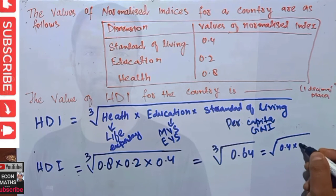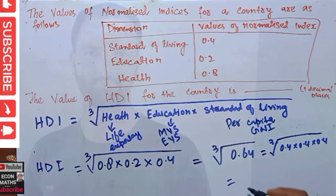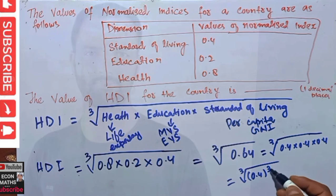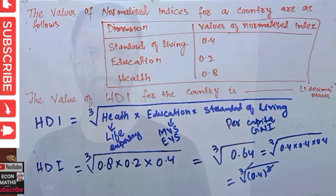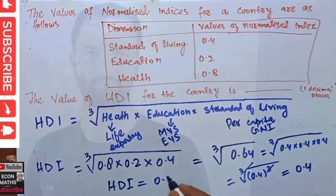Since 0.064 is a perfect cube, it can be written as 0.4 × 0.4 × 0.4, which equals 0.4 to the power of 3. Taking the cube root, the cube and the root cancel, leaving us with 0.4. So the HDI calculated for this country is 0.4.